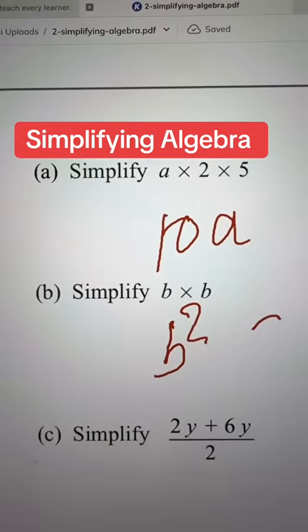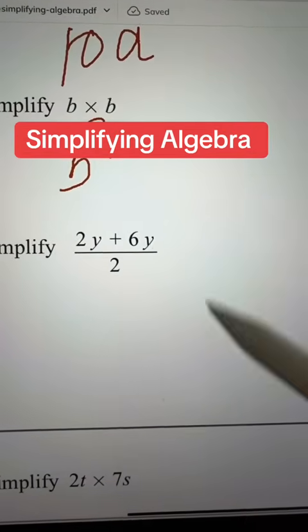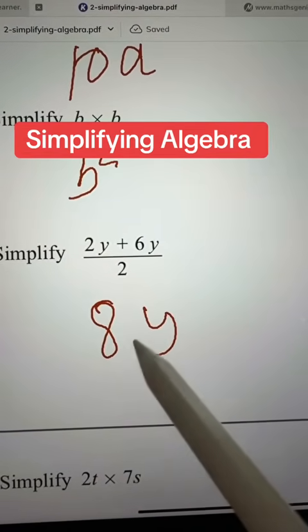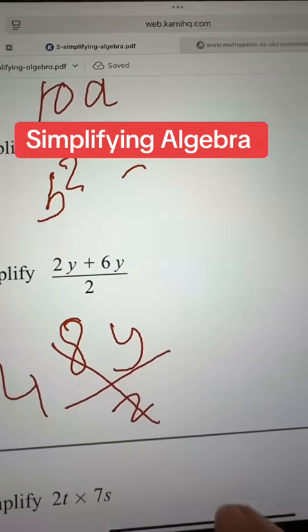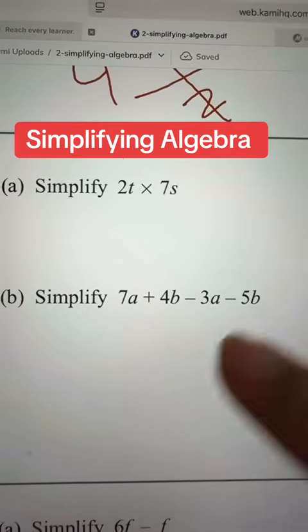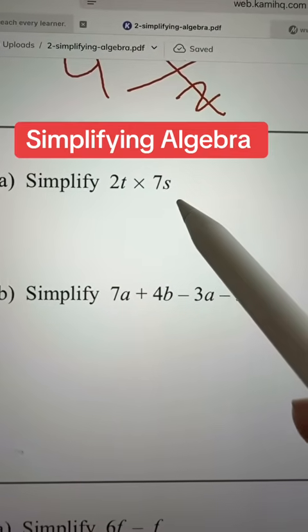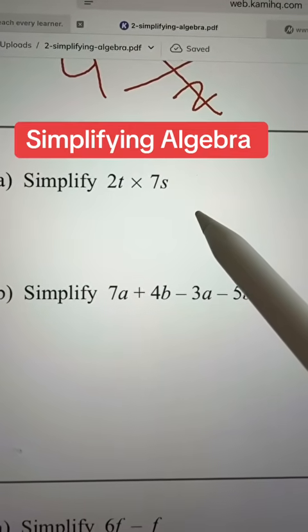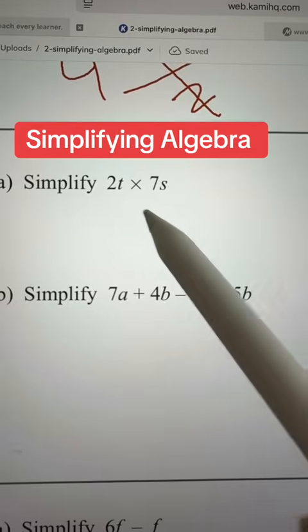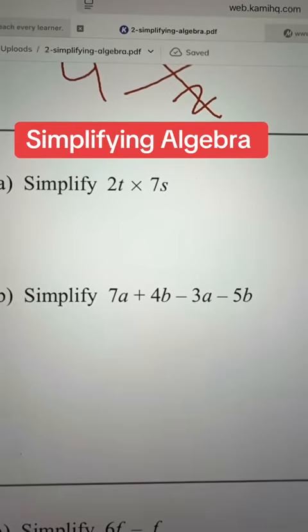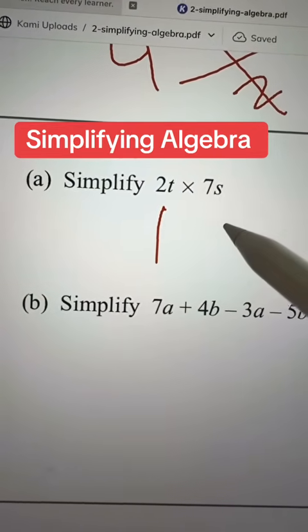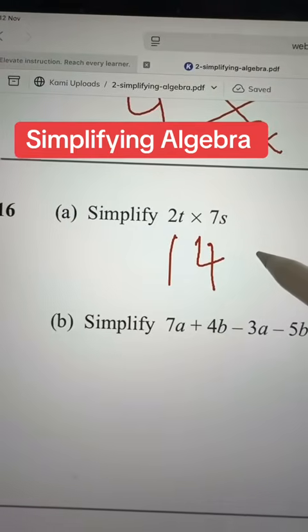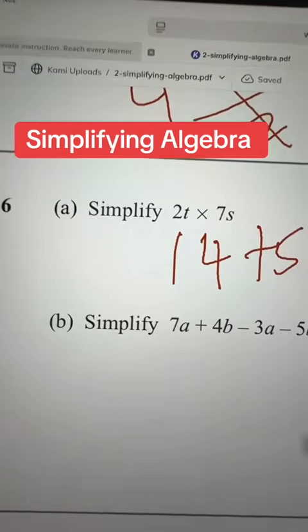So the next one now. 8y divided by 2, you will do that, your answer would be 4. In this one you cannot multiply them because they are different, so just multiply them, it will be 14ts.